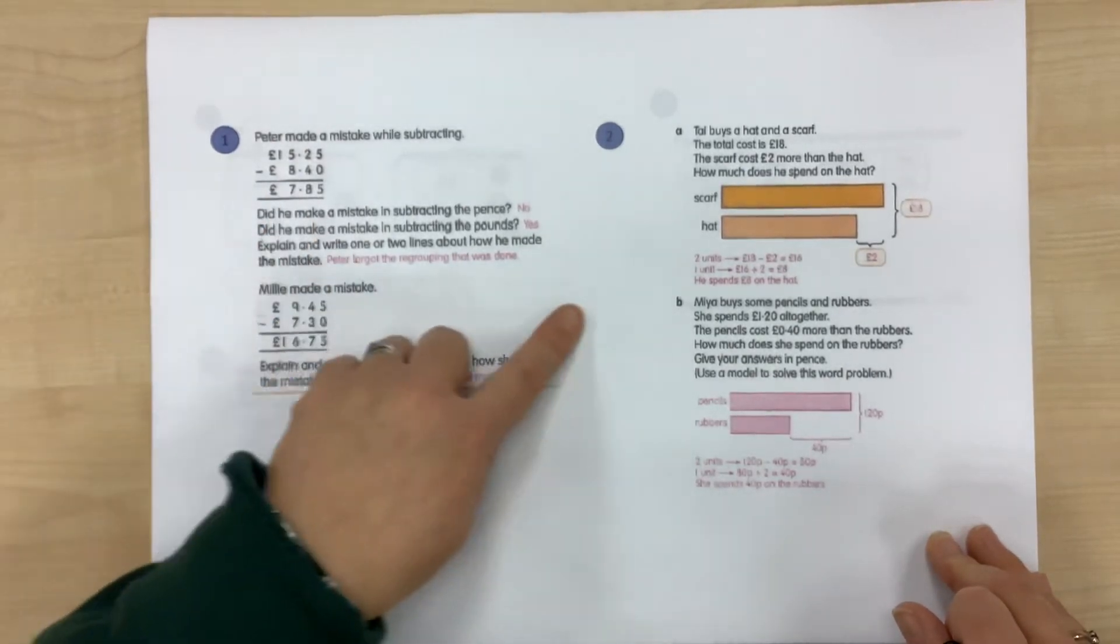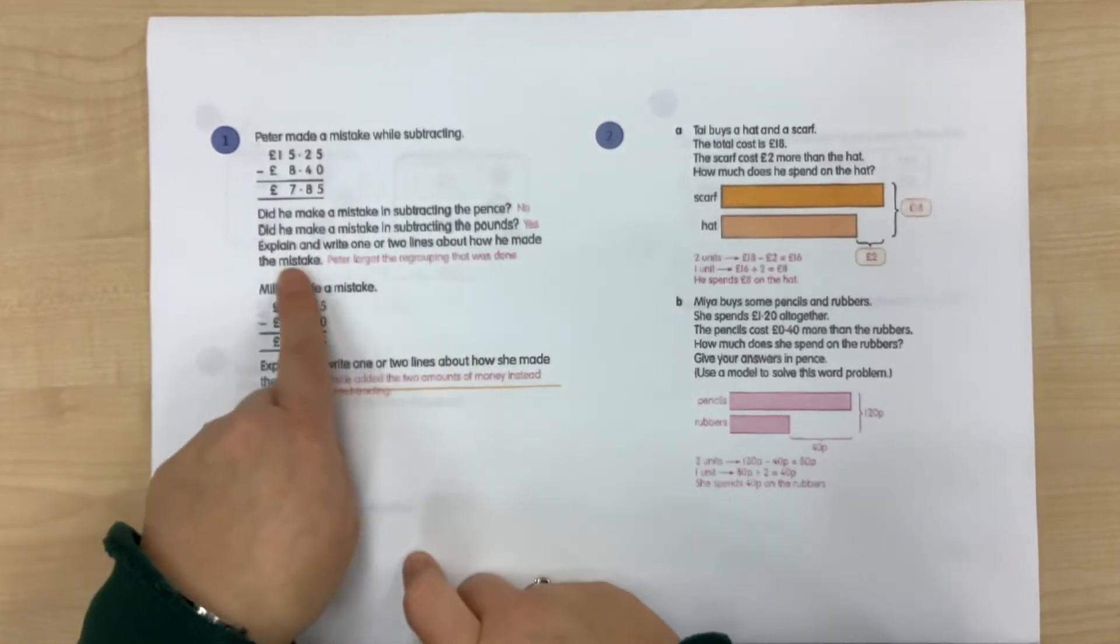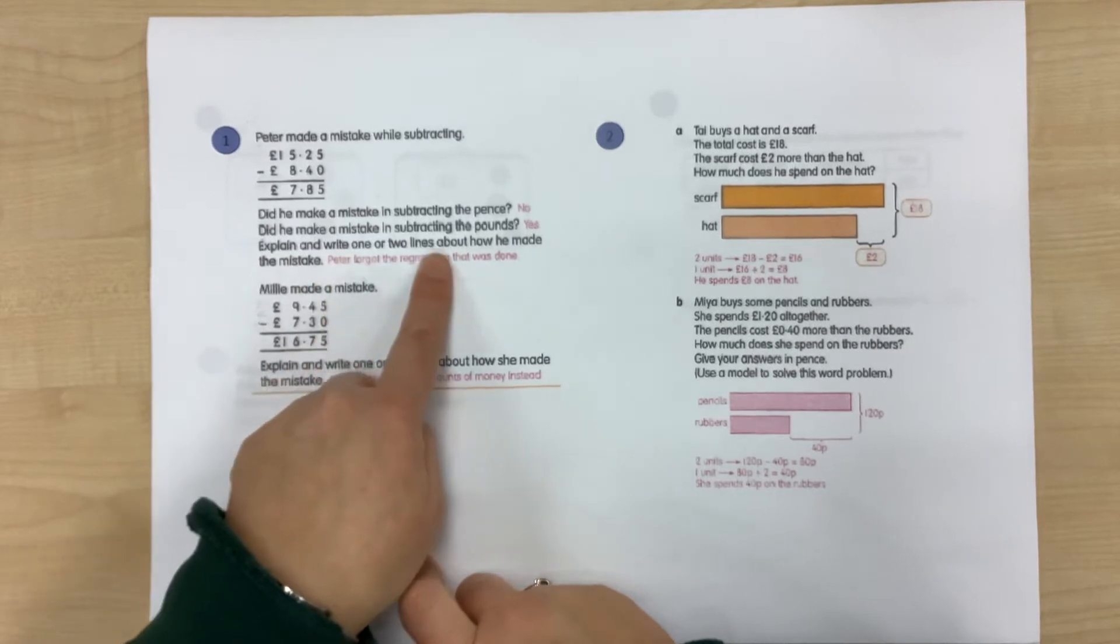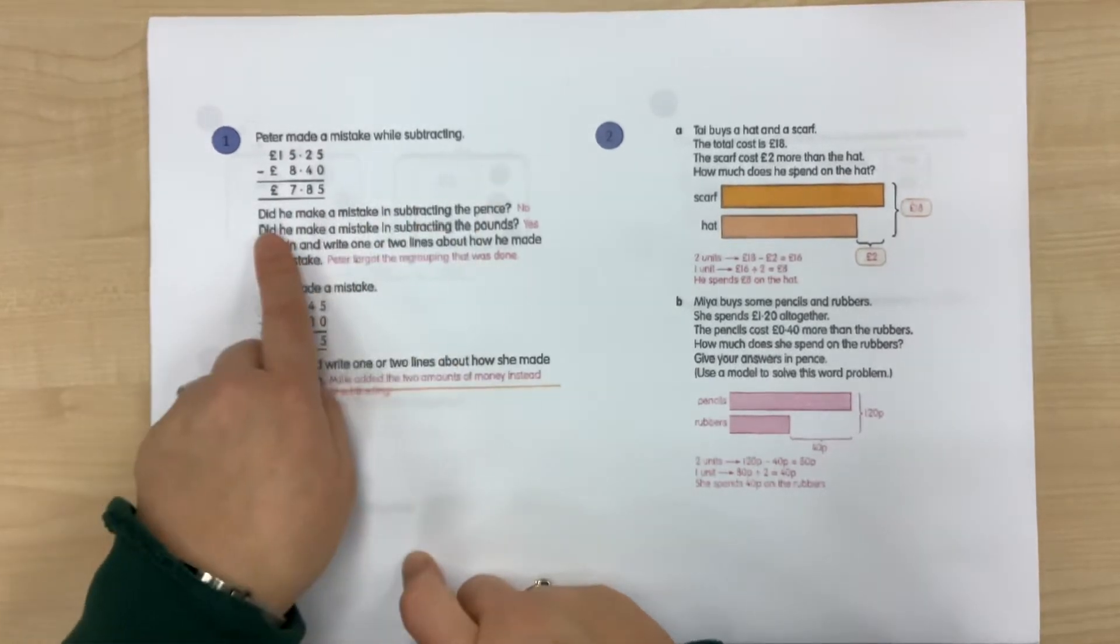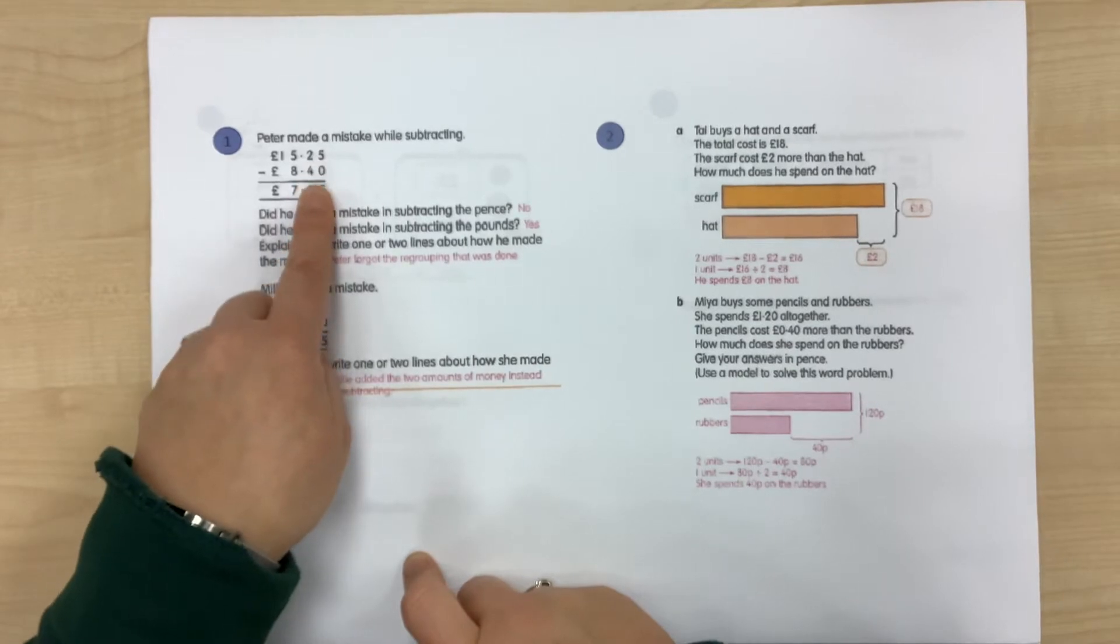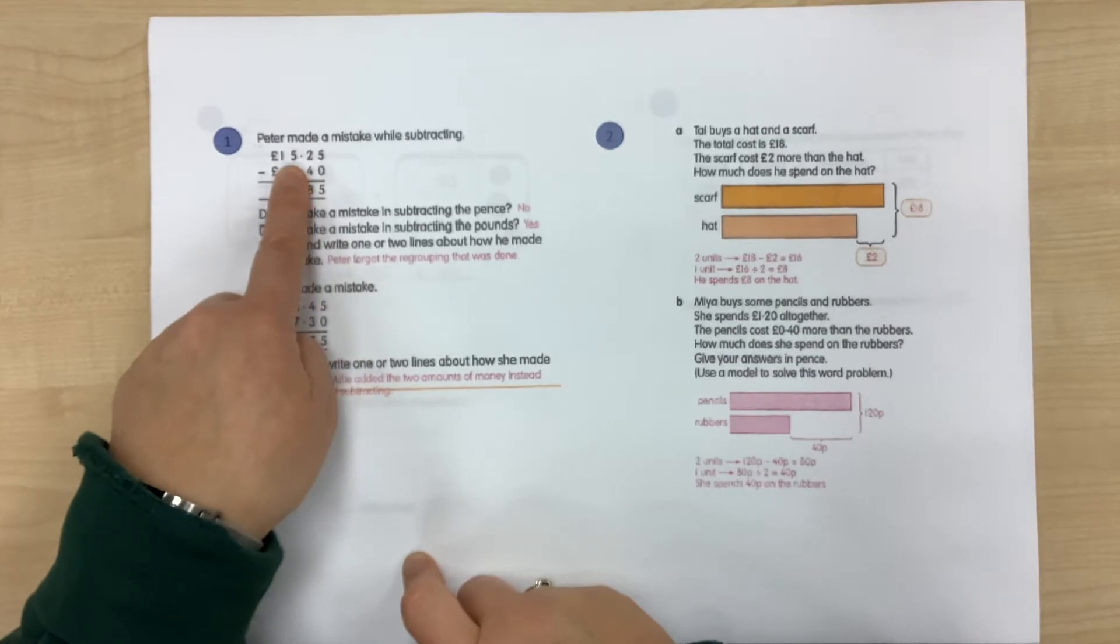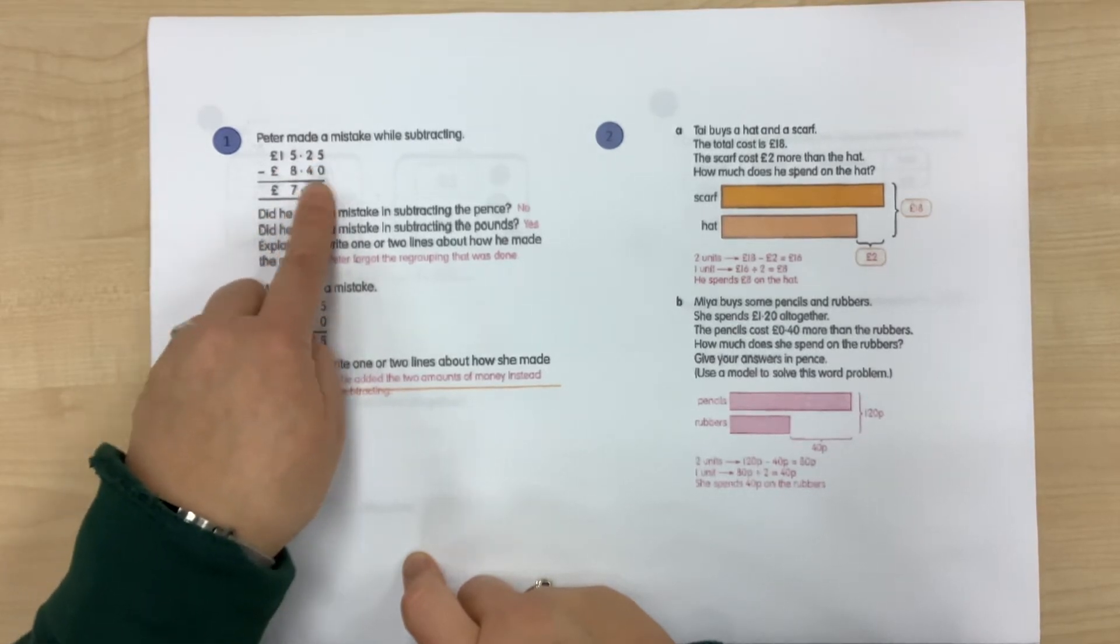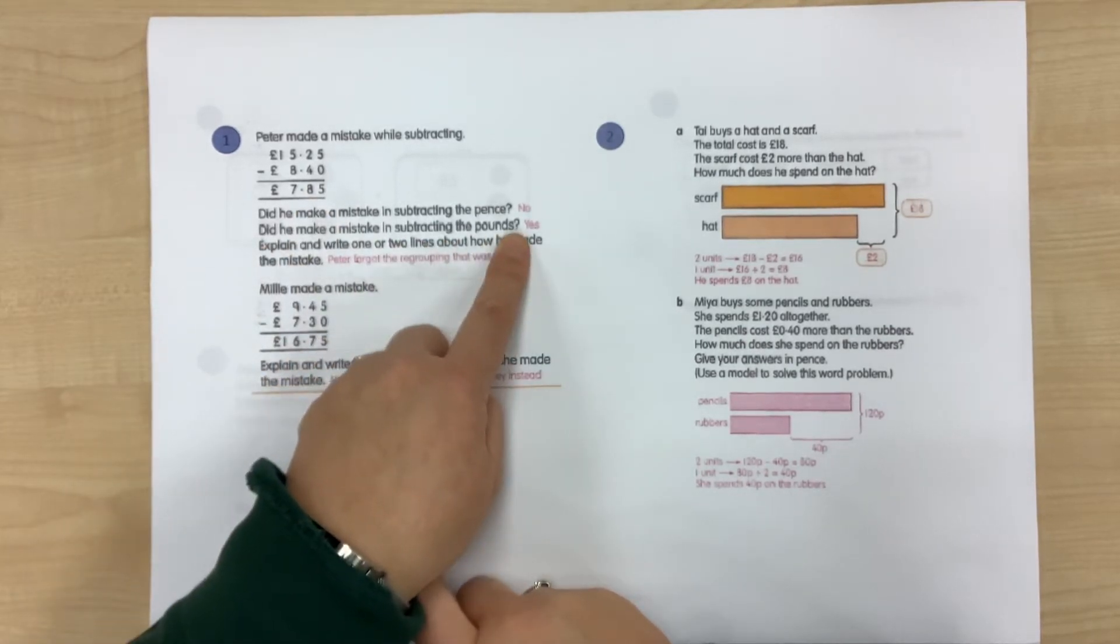And then you had a question here where you had to spot the mistake or decide what the mistake that Peter had made. Now, as usual, we would expect you to answer each of the questions. So he's made a mistake while subtracting. Did he make a mistake in subtracting the pence? 25 pence take away 40 pence. Well, we know that we would have had to regroup one pound so that we had 125 pence take away 40 pence, and that would leave us with 85 pence.